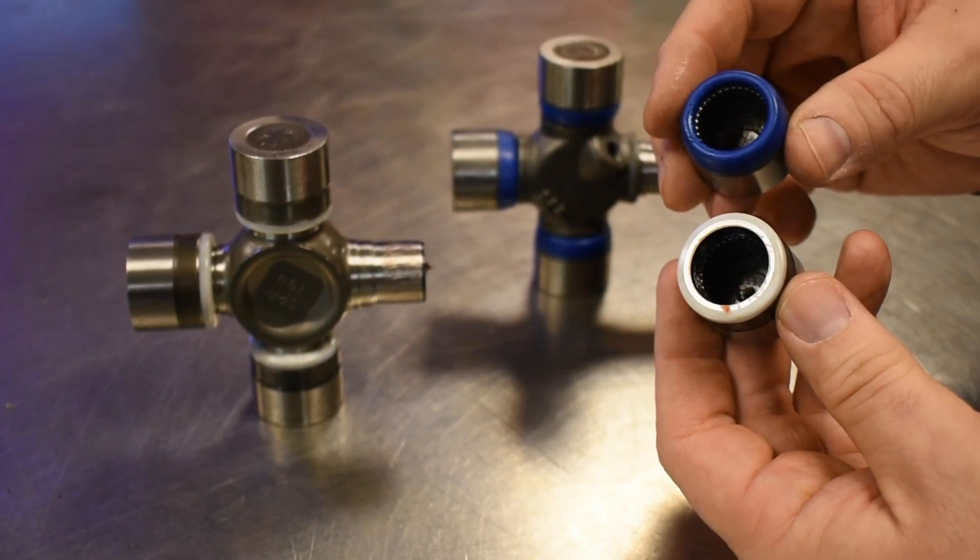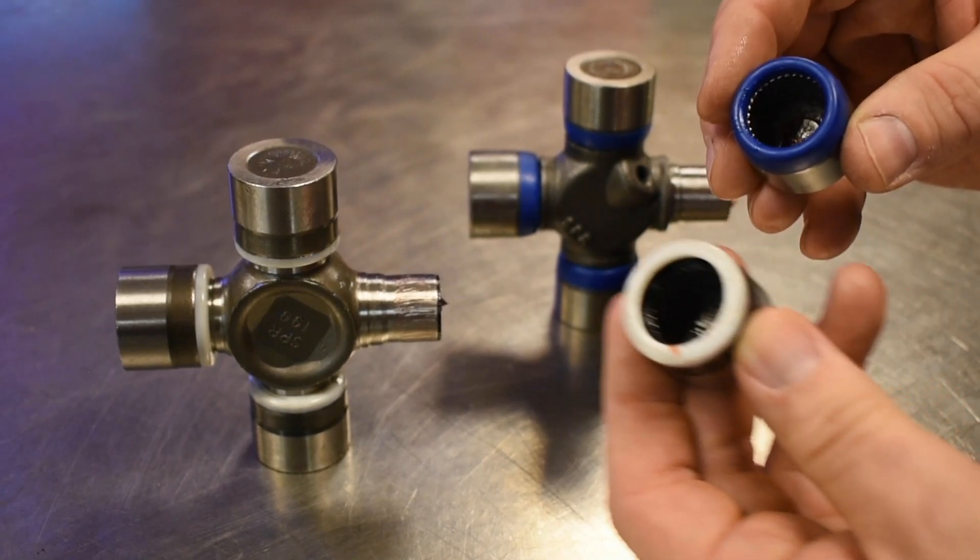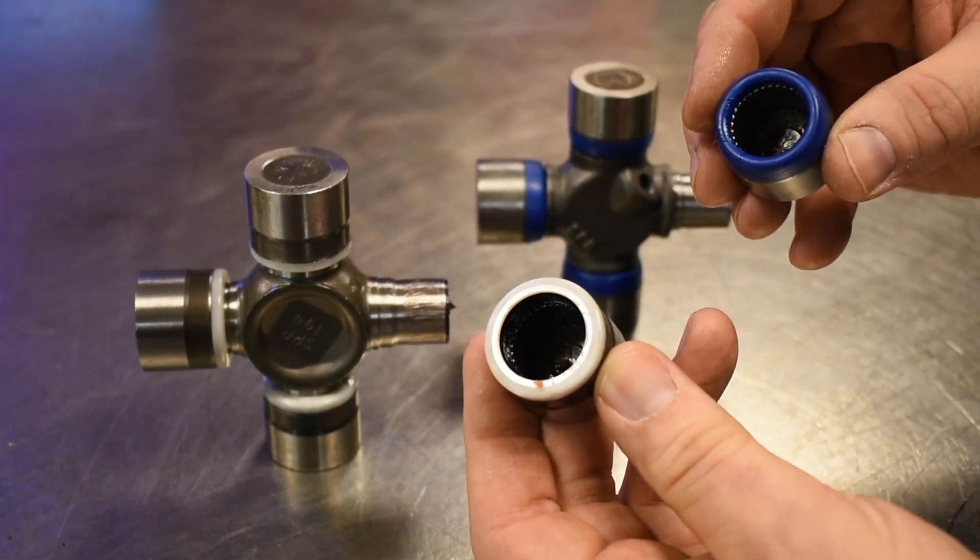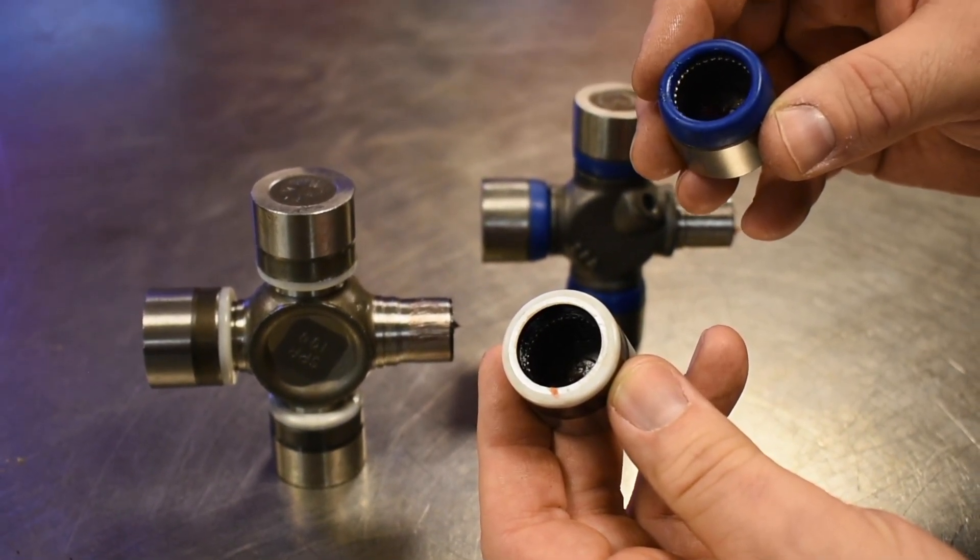Also the difference between these two are going to be the needle bearings. The needle bearings in the sealed u-joint are much more precision ground than what the greasable u-joint needle bearings would be.